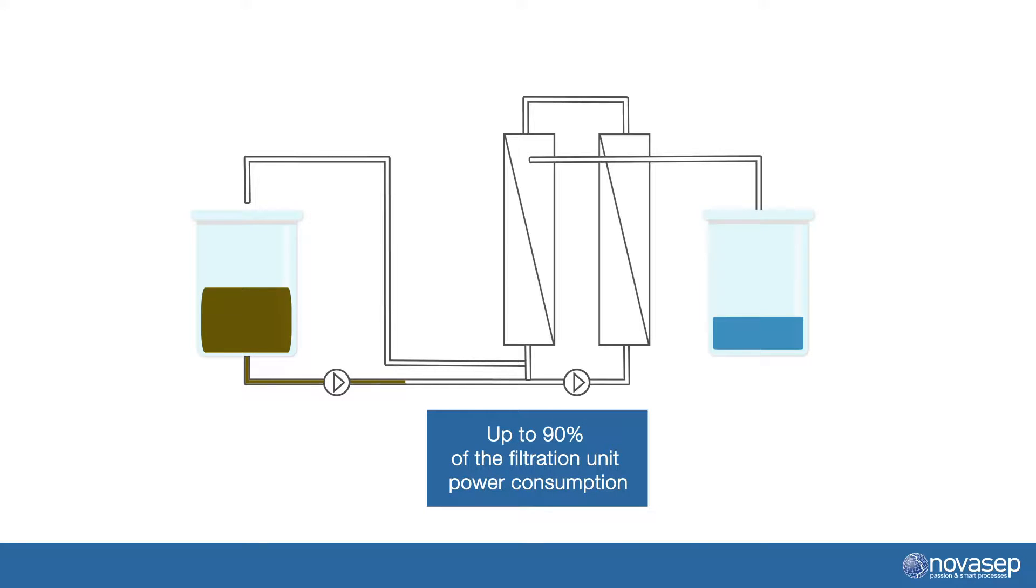Another important factor is that this circulation flow is significantly high. It often accounts for up to 90% of the power consumption of the filtration unit. Feed and CIP pumps account for the remaining 10%. Therefore, it is definitely worth optimizing the circulation flow rate.